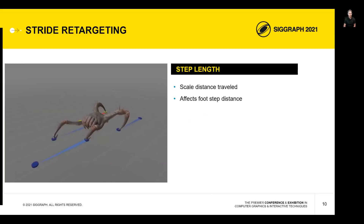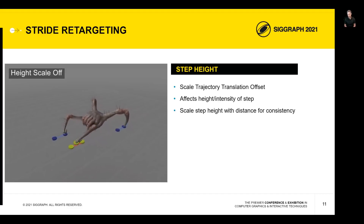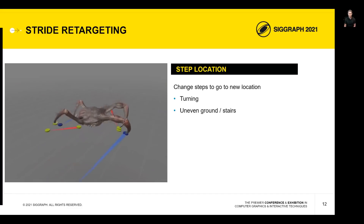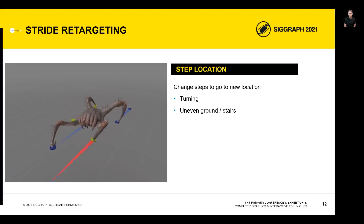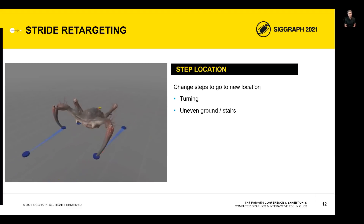Once you had this data, you could start doing some fun things with it. For example, you could reduce the stride length simply by making the previous and next footsteps closer together. You could also adjust the height of the footsteps, which was especially useful when reducing stride length — you'd want height to adjust proportionally so steps look natural at the different length. Really, you could change the footsteps to be almost anywhere, allowing us to completely change how and where characters moved as they navigated the world, naturally handling slopes, uneven terrain, and complicated tight navigation paths.